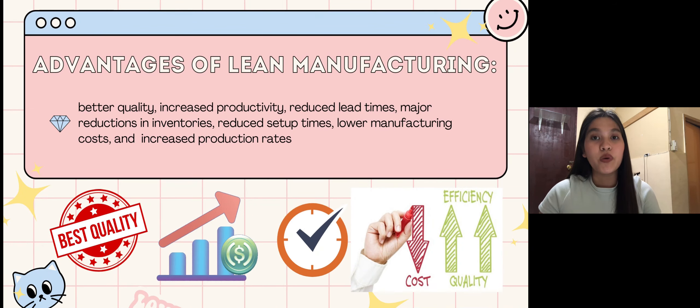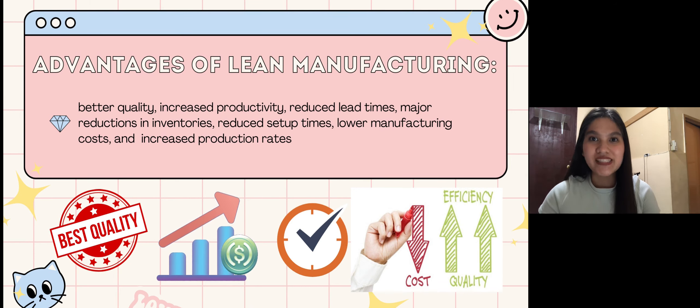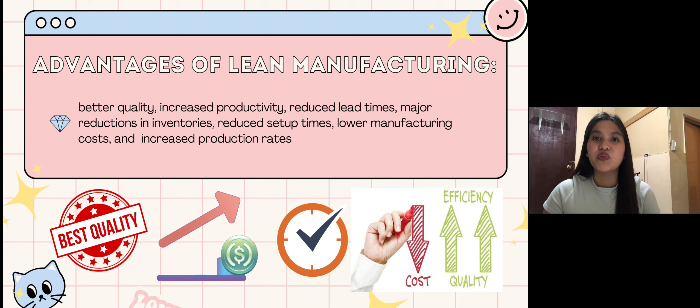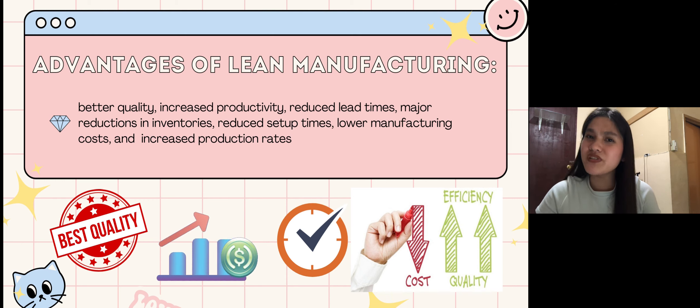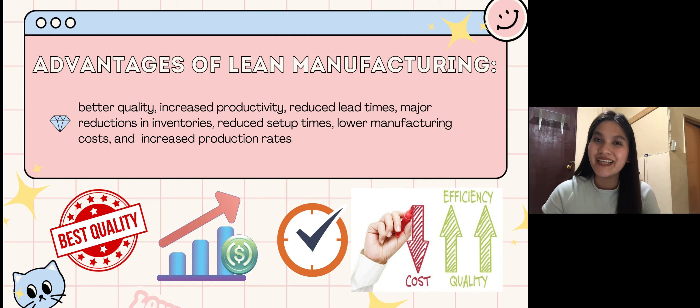Firms implementing lean manufacturing pursue a cost reduction or cost leadership strategy by redefining the activities performed within the organization. The advantages of using this strategy include better quality, increased productivity, reduced lead times, major reductions in inventories, reduced set-up times, lower manufacturing costs, and increased production rates. This offers great financial benefits and supports companies in quickly scaling their operations. Lean strategies also boost agility and competitiveness.